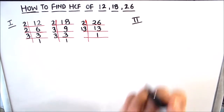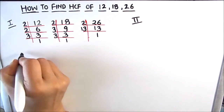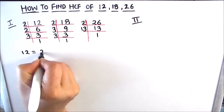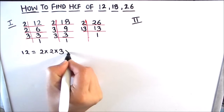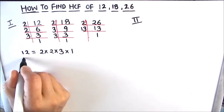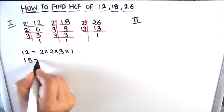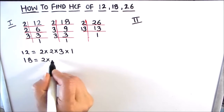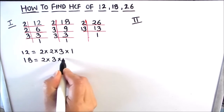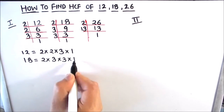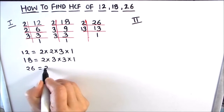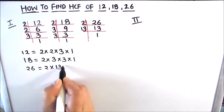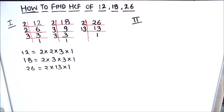So now we have the factors of 12 as 2 × 2 × 3 × 1, the factors of 18 as 2 × 3 × 3 × 1, and the factors of 26 as 2 × 13 × 1.